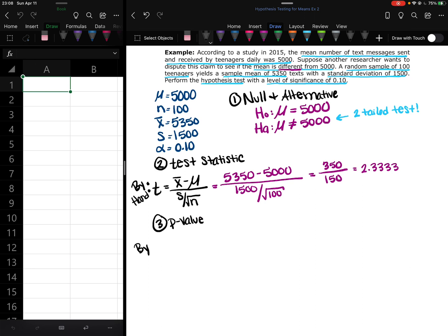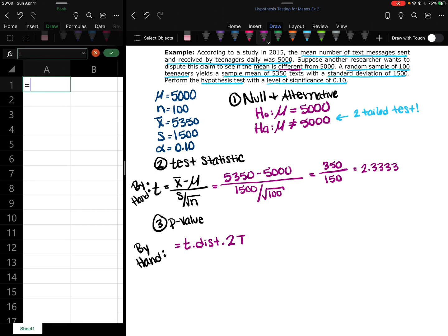So the third step is to find the p-value. And again, just like with the right-tailed test, Excel has a built-in way for us to be able to do the two-tailed test. When we go into Excel, we're going to do equals t.dist.2t. And I'm going to do it over here off to the side. So equals t.dist.2t.